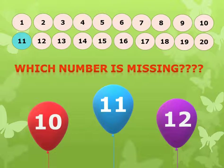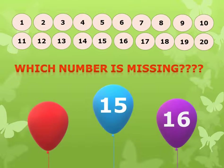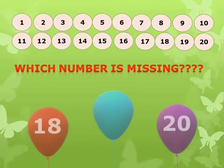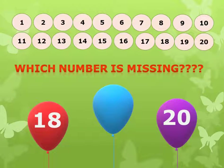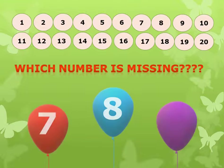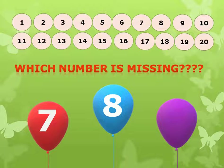Now, tell me which number is missing? Missing is 40. Excellent. Wow, now which number is missing? 19. Very good. Yes. Tell me, tell me which number is missing? 19. 19. No, it's wrong.